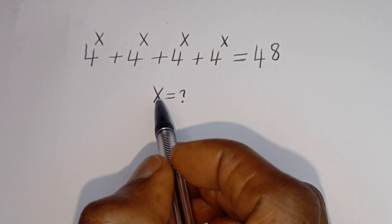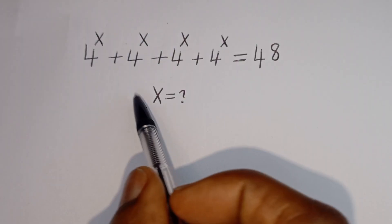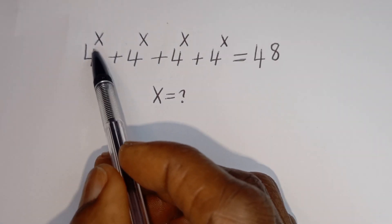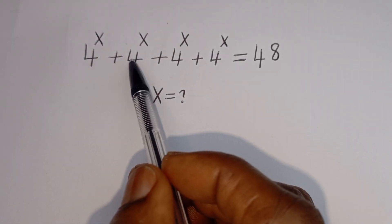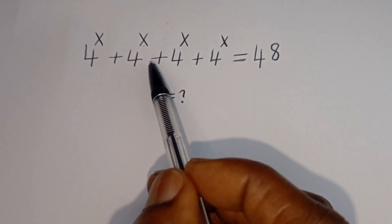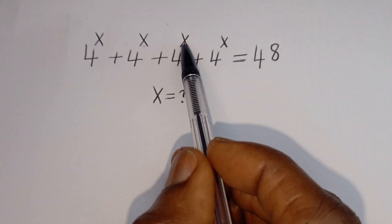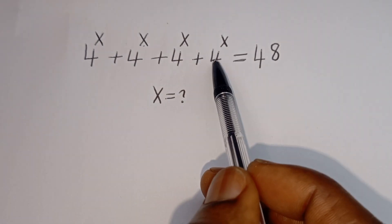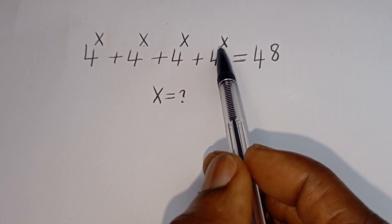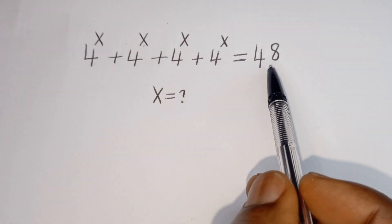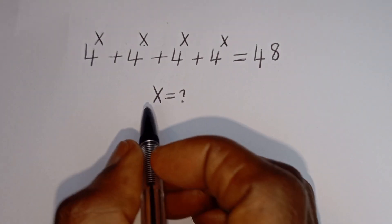Hello. How to solve for S in this equation: 4 to the power of S plus 4 to the power of S plus 4 to the power of S plus 4 to the power of S is equal to 48.